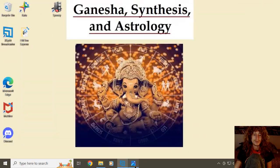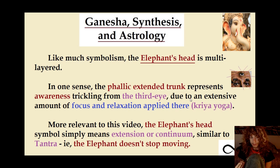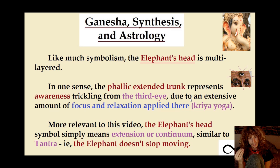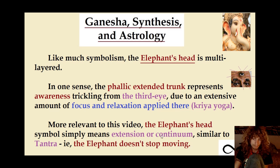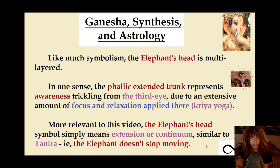In terms of the third eye, the halfway point of being never arriving but always being here — this is what's represented by the energy coming consciously from the root up to the crown and back down. Even the root and crown coming together relates to this Ganesha symbolism. The elephant's head symbol simply means extension or continuum, similar to in Tantra — the elephant's head doesn't stop moving. Ganesha is the one that keeps infinity going through the word, through Mercury, through infinity.